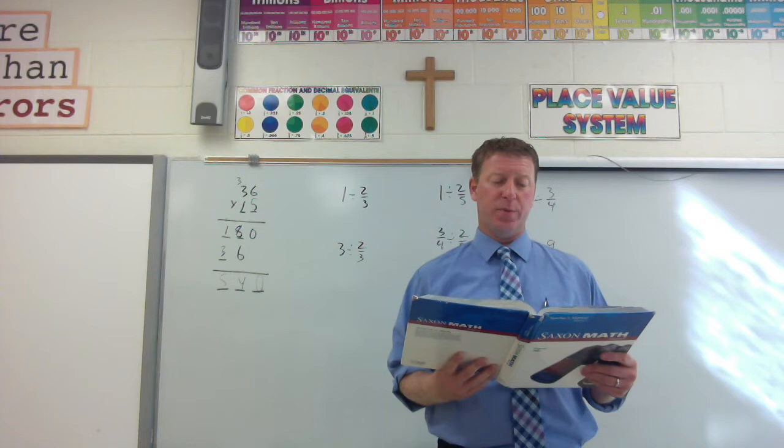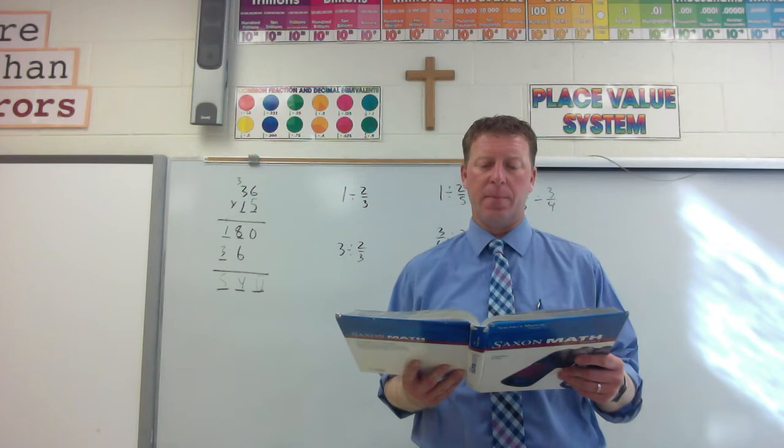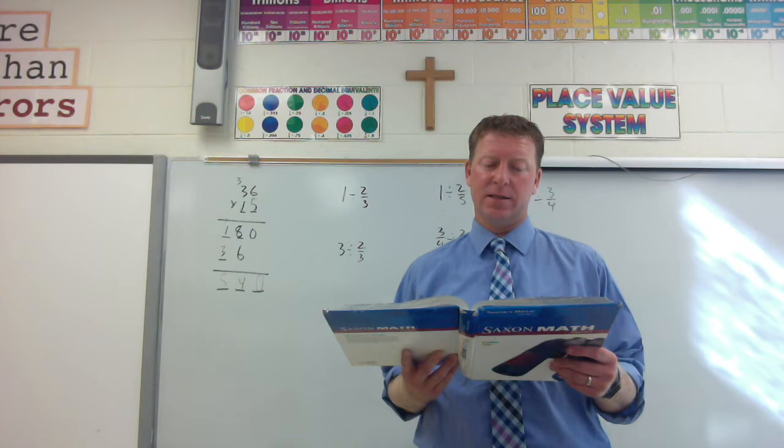Likewise, when we ask the question, how many quarters are in three dollars, we are asking a division problem, which is three divided by one-fourth. Turning the page, we can use the answer to the first question to help us answer the second question. There are four one-fourths in one, so there must be three times as many one-fourths in three. Thus, there has to be twelve one-fourths in three. We found the answer to the second question by multiplying three by four, the answer to the first question. We will follow that same line of thinking for the next few examples.